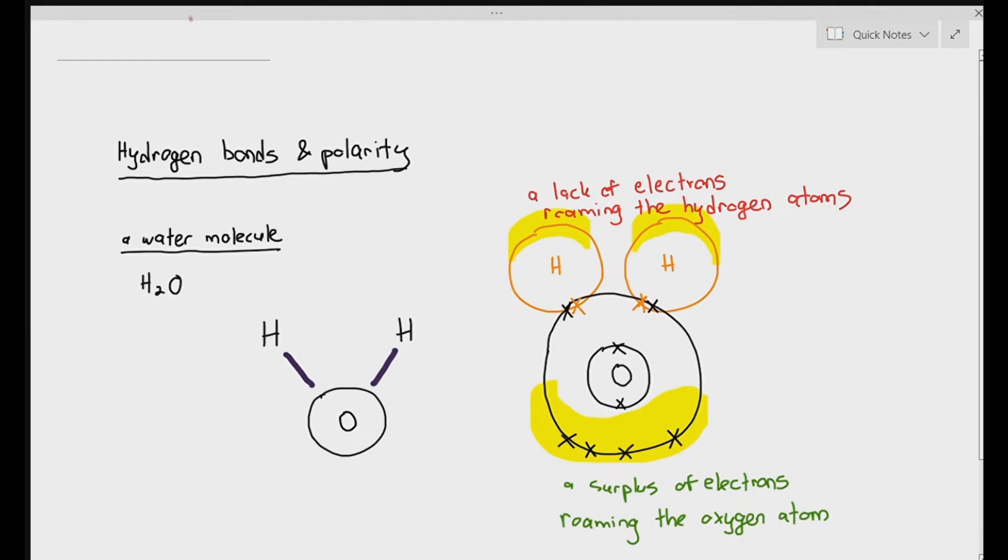If we also look at hydrogen atoms, the tops of the hydrogen atoms where I've highlighted have a lack of electrons roaming around the region. This is now known as something called an unequal electron distribution. Unequal electron distribution just basically means that some areas of the atom has more electrons, some areas have less electrons. If you look at this molecule of water here, the oxygen side has an extra surplus of electrons and the hydrogen side has a lack of electrons at the top.